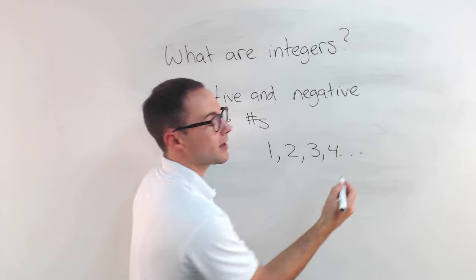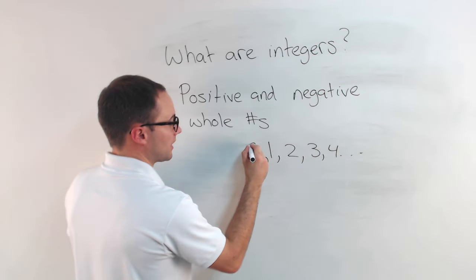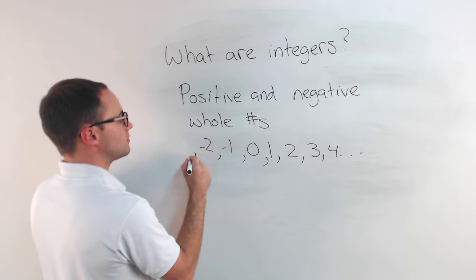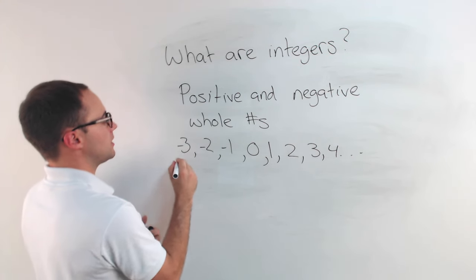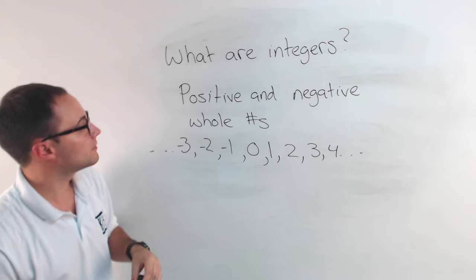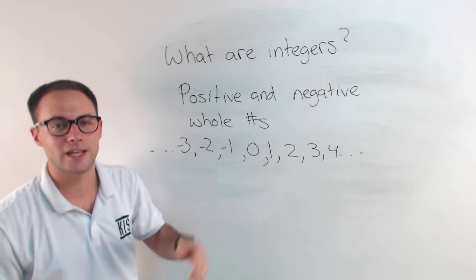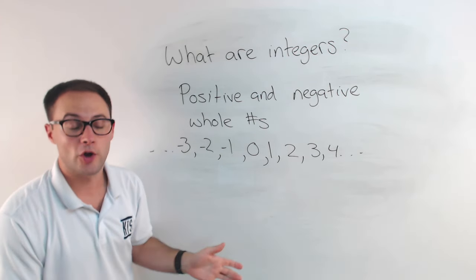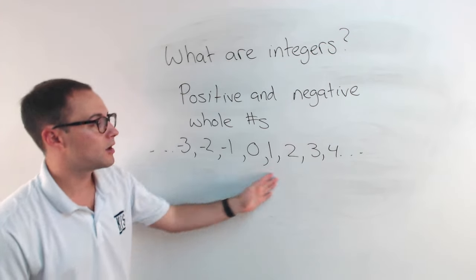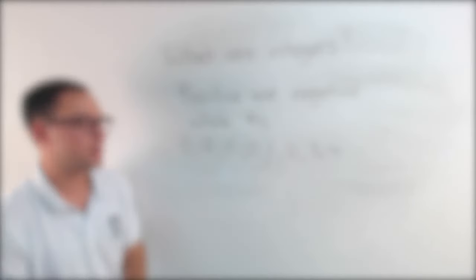Also the negative of those — 0, negative 1, negative 2, negative 3, and so on. Those are also integers. When you think integers, just think positive and negative whole numbers. They don't include fractions. They don't include decimals — only whole numbers that are either positive or negative.